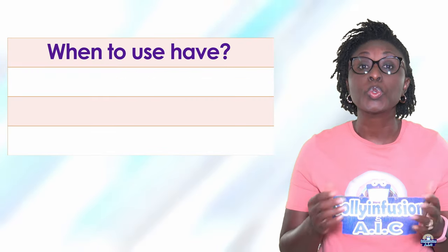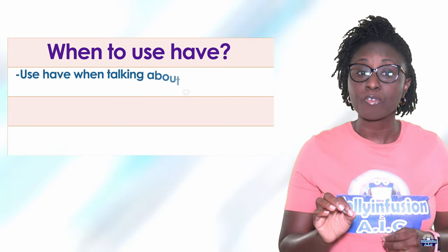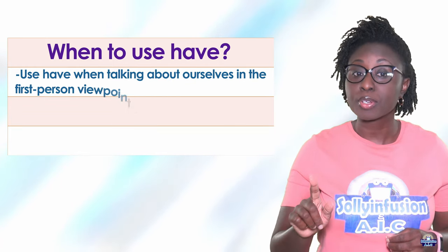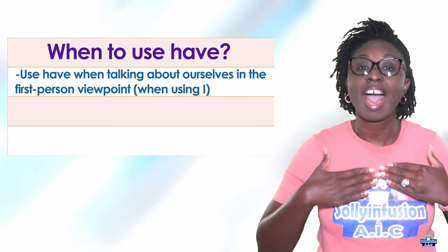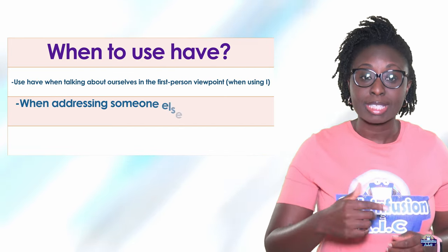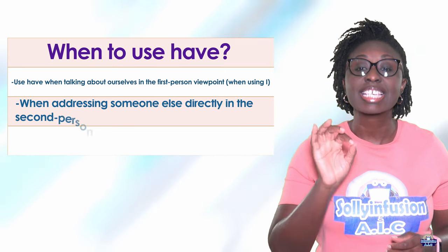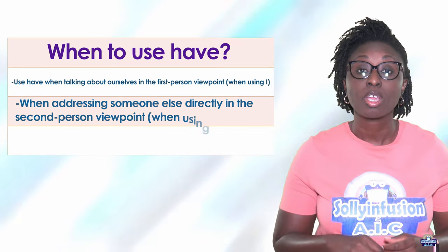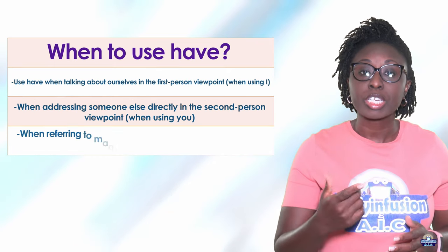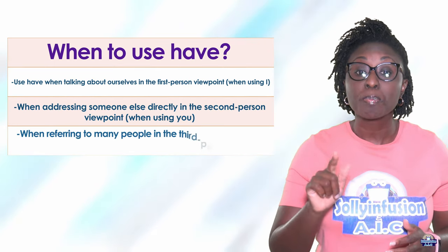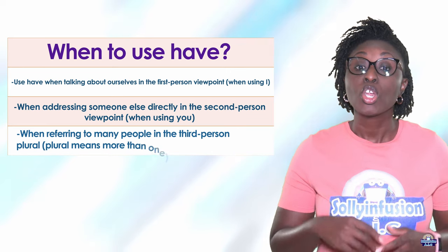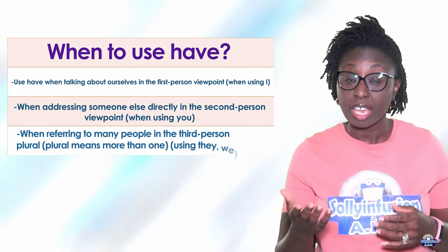When to use have: use have when talking about ourselves in the first person viewpoint, when using I. Use have when addressing someone else directly in the second person viewpoint, when using you. Use have when referring to many people in the third person plural. Plural means more than one.